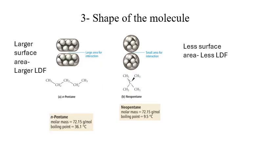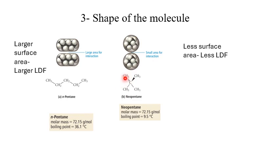The third factor that affects the strength of LDF is the shape of the molecule. Consider these two molecules: normal pentane, which is a straight chain, and neopentane, which is branched. Normal pentane has more surface area to interact with neighboring molecules, so the attraction is stronger than with neopentane, which has less surface area. Greater attraction requires more energy to break, resulting in a higher boiling point for normal pentane. Neopentane requires less energy to break its attractions and has a lower boiling point, even though both molecules have the same number of carbon and hydrogen atoms — only the shape, and therefore the surface area and interaction, changes.